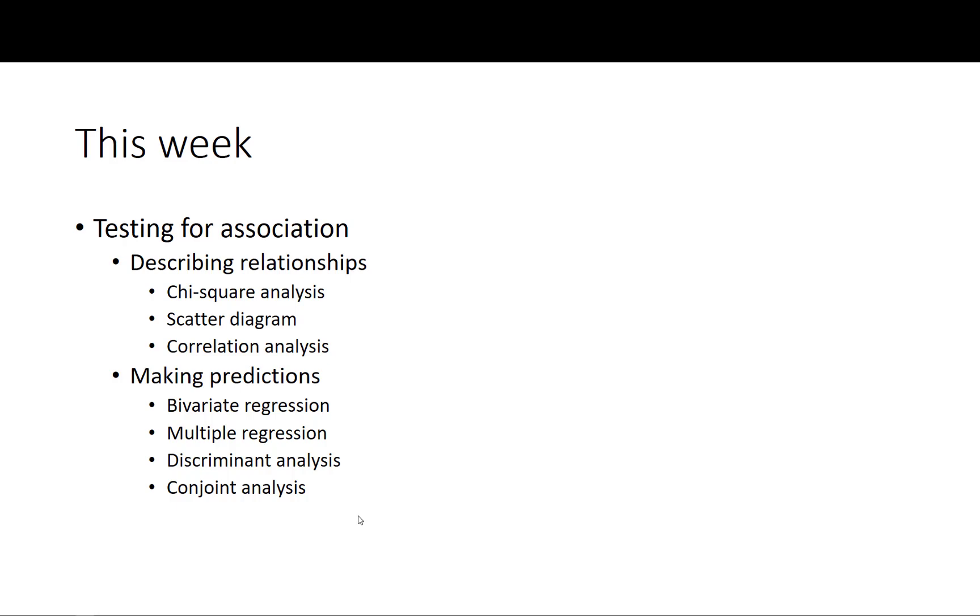This will be a bivariate regression where we have one X and one Y. We'll do multiple regression where there are multiple independent variables or X's and one Y. I will then show you how to do a discriminant analysis and I'll talk briefly about what a conjoint analysis is.